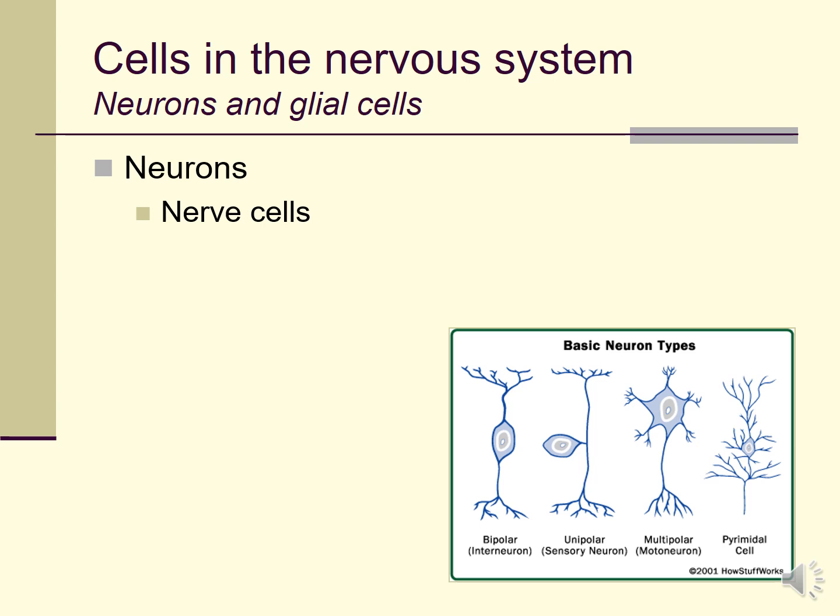Sensory neurons send signals from the sense organs into the sensory nervous system. Motor neurons send signals from the sensory nervous system out to muscles, glands, and organs. Interneurons carry signals within the central nervous system. Along with all these neurons doing their different jobs, we have glial cells which provide support for the neurons. Glial comes from the Latin referring to neuroglia, meaning nerve glue, suggesting glial cells connect and support neurons and other tissues in the nervous system.